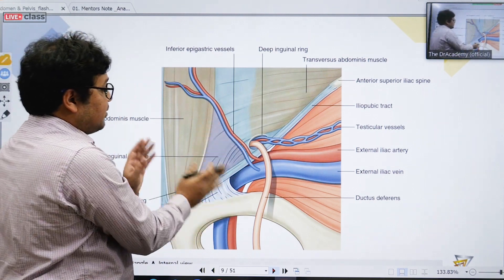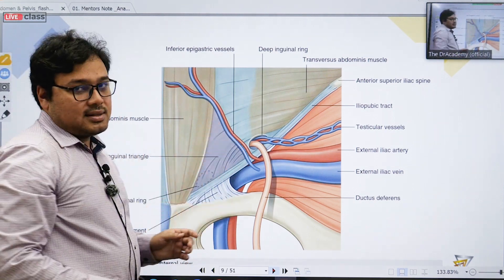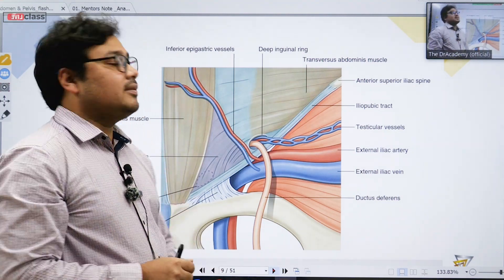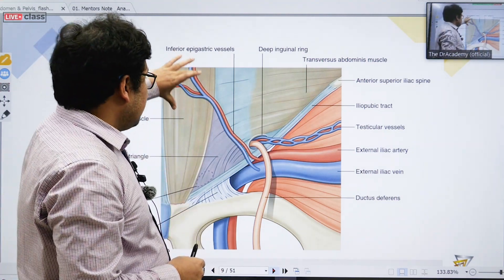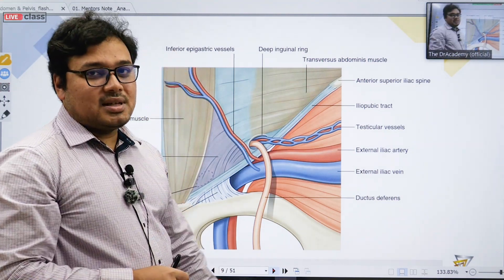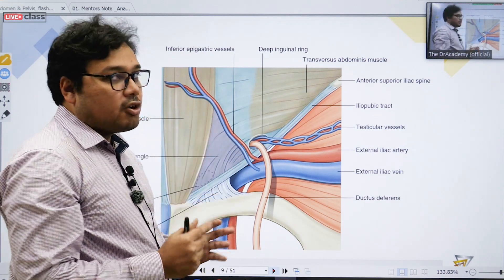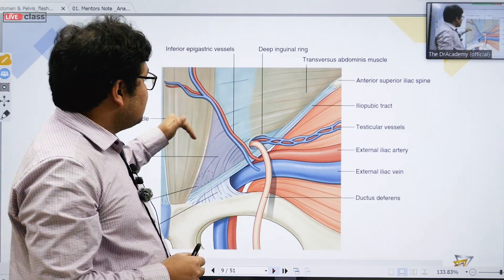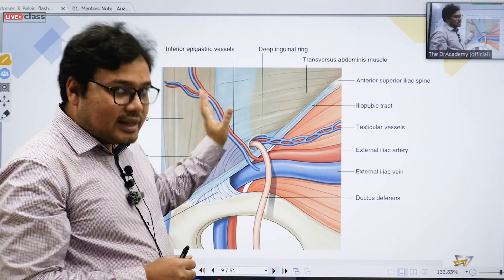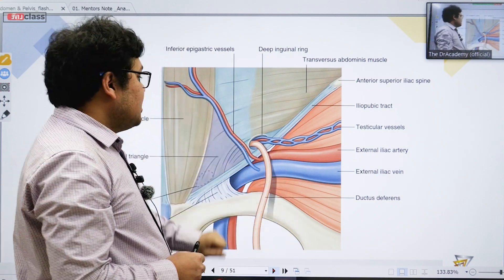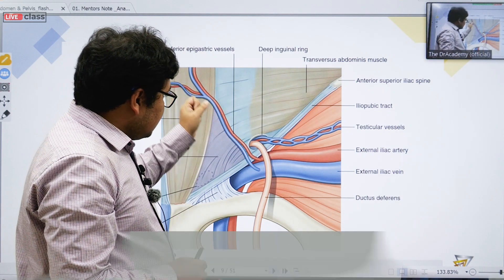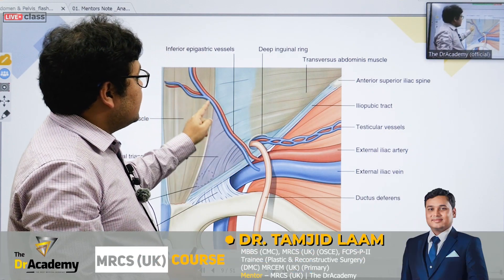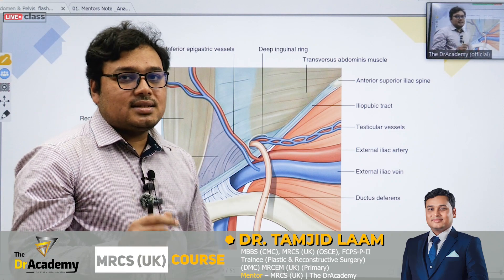This is the inferior epigastric vessel — this is the right side, or for the left side. First, think about why the rectus abdominis muscle is here. Always start from the rectus abdominis muscle to understand when they give you any cropped picture. This is the rectus abdominis muscle, that's why this is the midline. So this is actually the left side photograph that has been given.